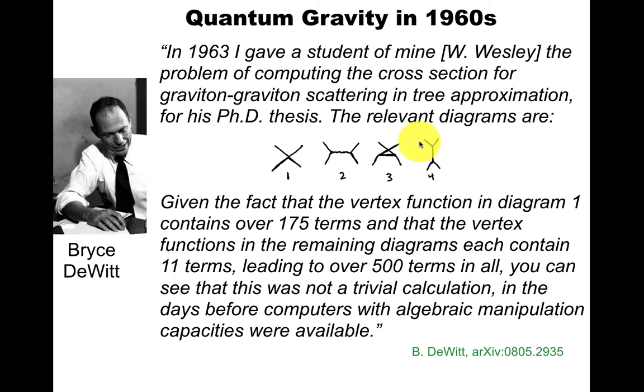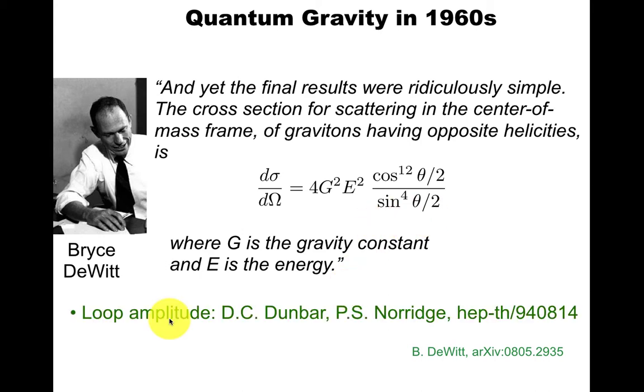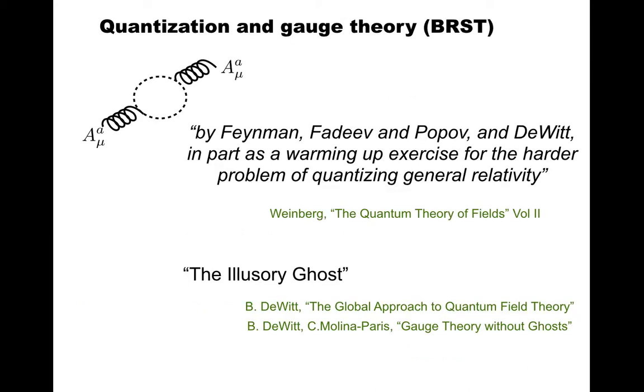Bryce-DeWitt assigned 4-point tree-level graviton scattering to a student who got this cross-section. It's very simple, and it's interesting for a modern reader to try to dig this out in the current literature. I gave some entry points later, but this is at tree level, so the 4-graviton one-loop amplitude was computed in this paper in 1994. And of course this calculation is very difficult, but they use string-based methods. As Bryce-DeWitt emphasizes in this paper, even if you were only interested in field theory, string amplitude calculations provide a different view of things that we know are important, such as Yang-Mills theory.